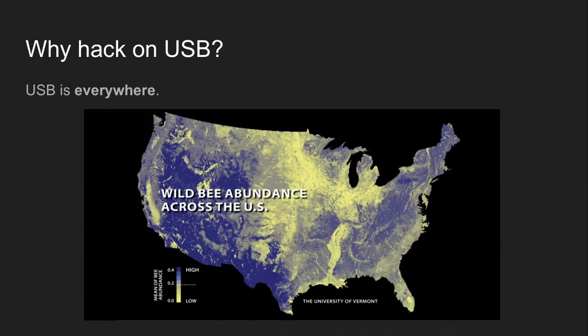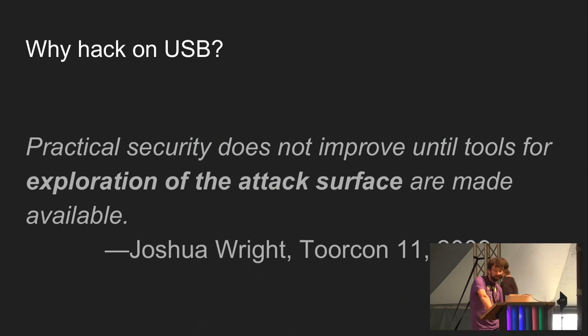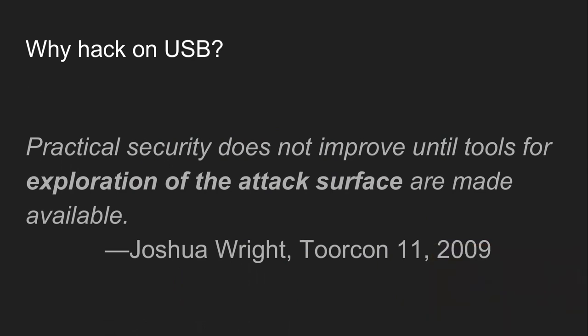It turns out USB is absolutely everywhere. A couple of years ago, a guy called Josh Wright came up with a concept that we're not going to improve the security of our devices until it's really easy to attack those systems. It's not a real attack until a script kiddie can run it — or a journalist. The better your tools are for attacking something, the more likely we are to fix the security because it's going to be more obvious that it's broken.